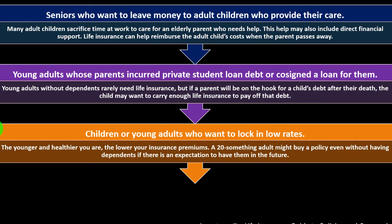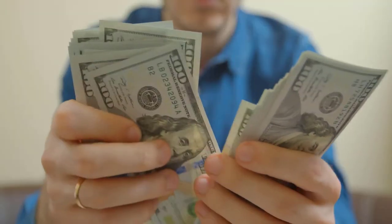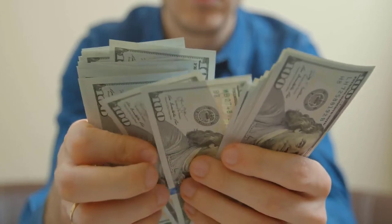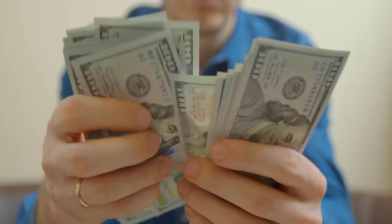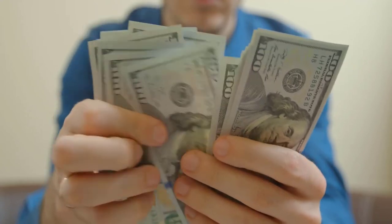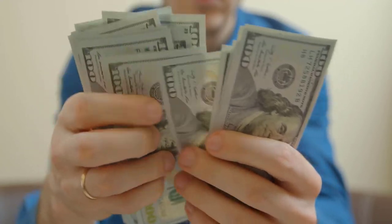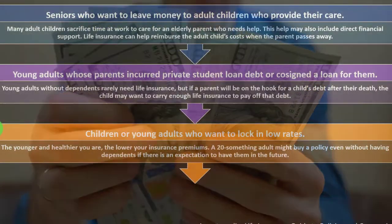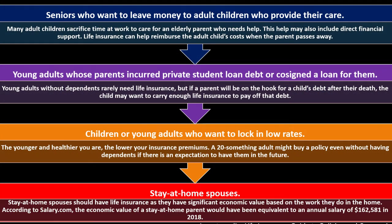A 20-something adult might buy a policy even without having dependents if there is an expectation to have them in the future. If you're young, healthy, and not yet married, you can buy insurance now while it's cheaper and lock in a lower rate — so you're already lined up even if no one is currently dependent upon you.